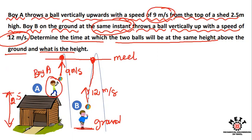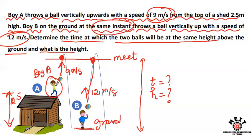So, how are the two balls meeting at the same time and at the same height? Ball A is slower and Ball B is faster. The two balls will meet, and the meeting point is defined by the same time and same height.